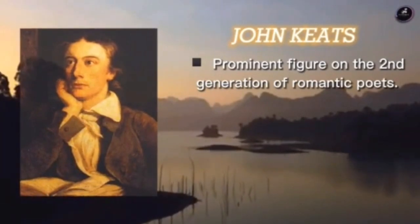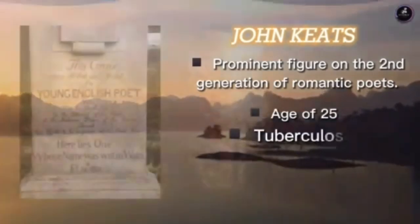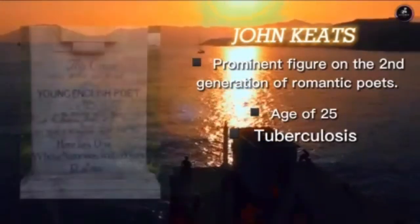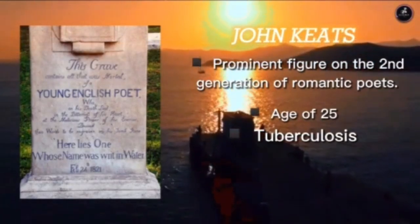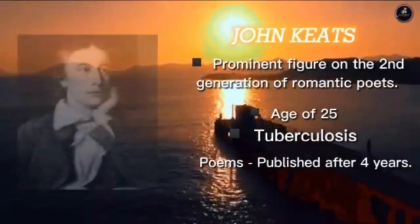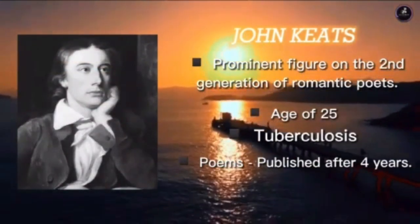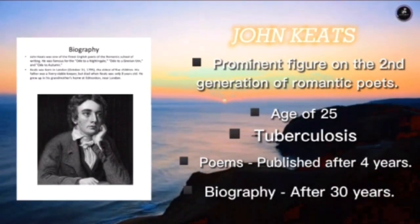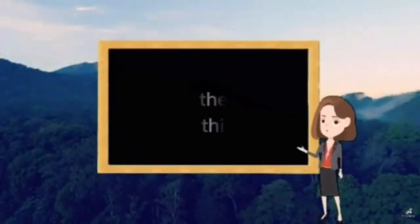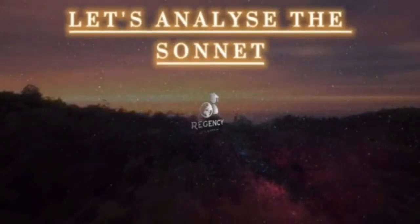John Keats is a prominent figure in the second generation of Romantic poets. He died at the age of 25 and suffered from a disease called tuberculosis. His poems were published four years after his death, and his biography was published after 30 years, because of poetic criticism.